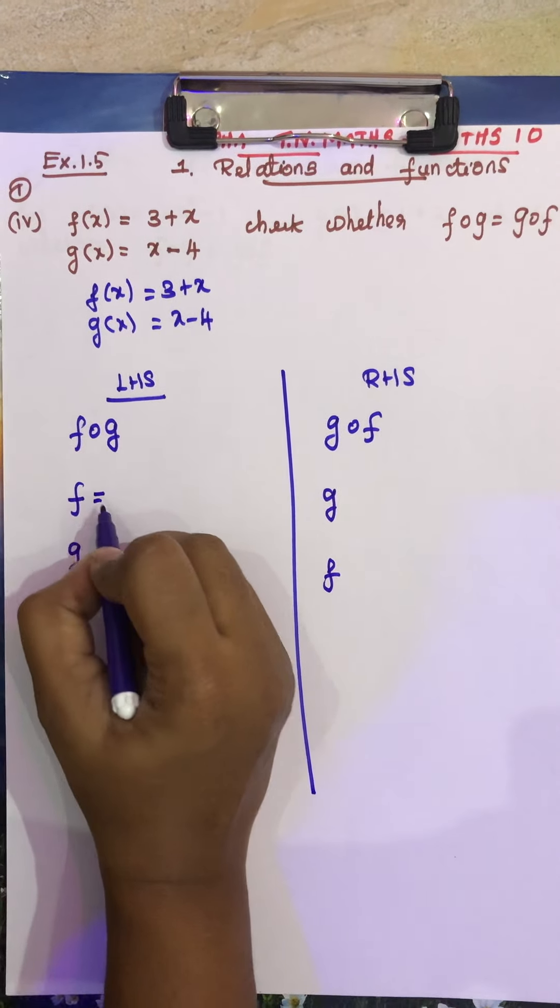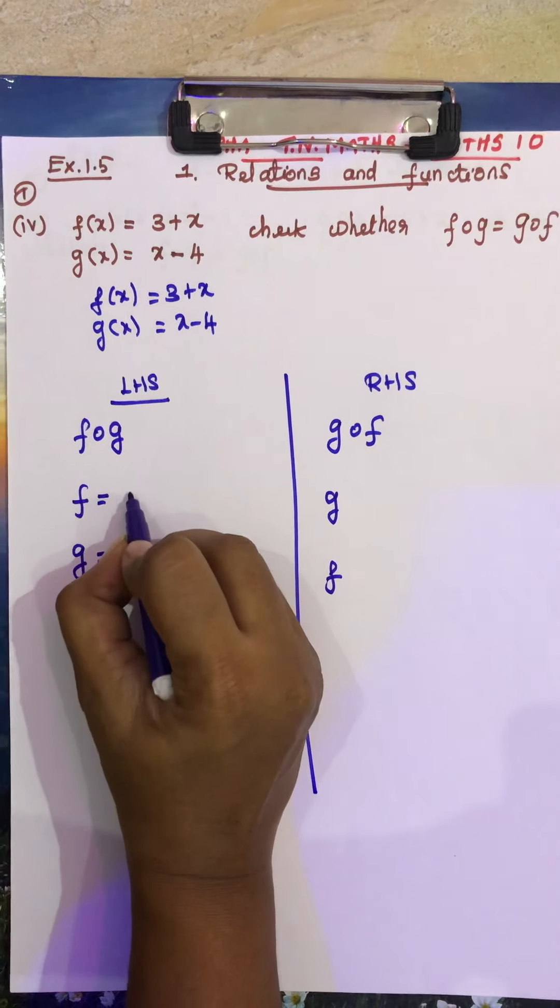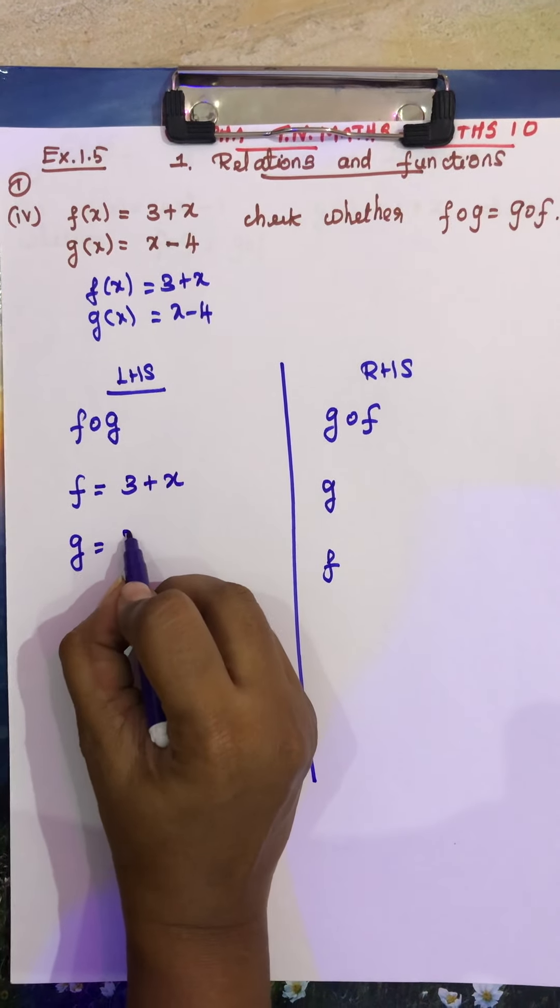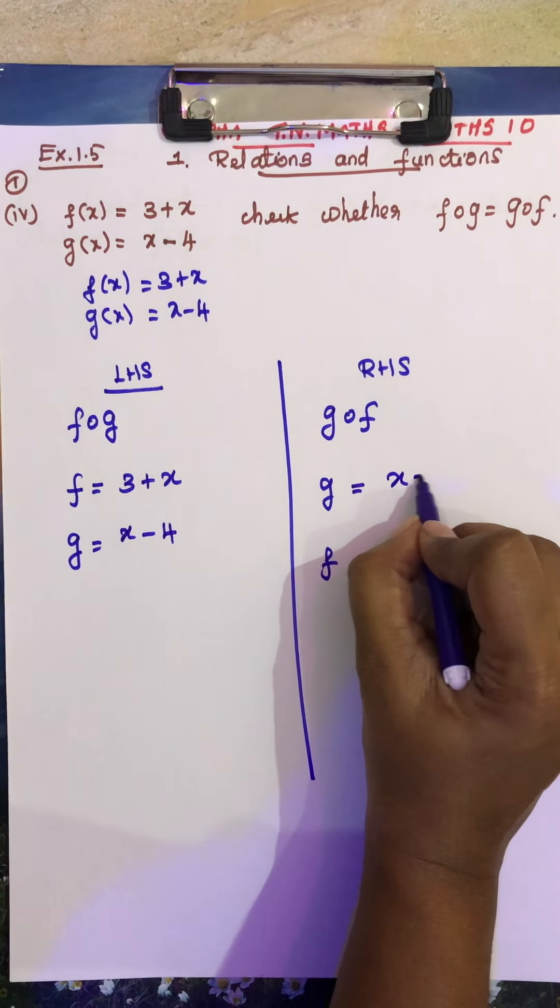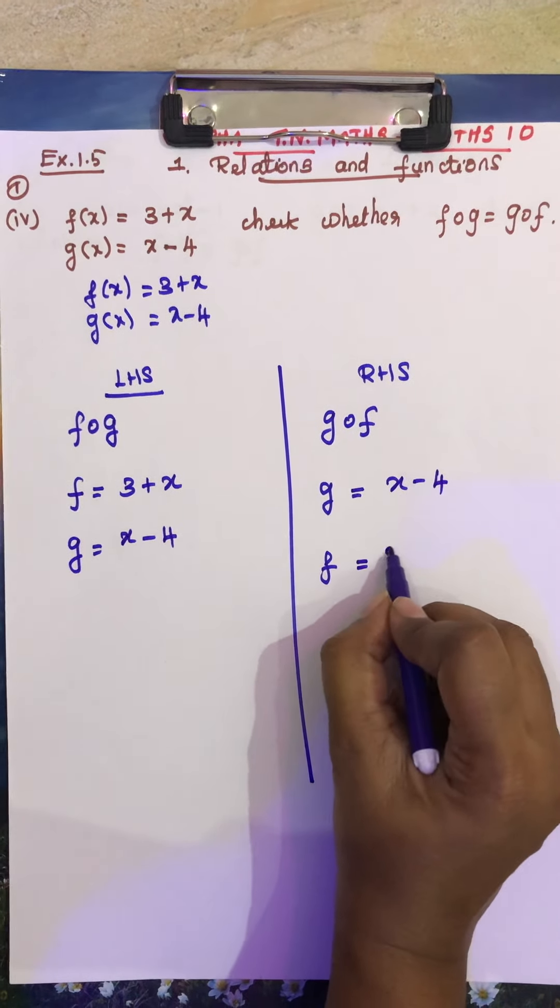So, this is f. F is function 3 plus x. g is going to be x minus 4. We have g, x minus 4. f is going to be 3 plus x.